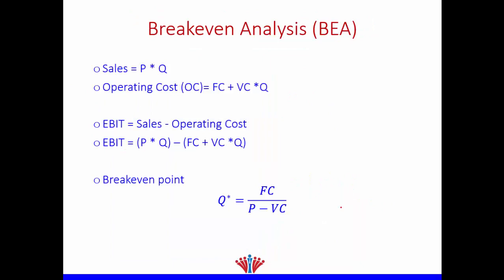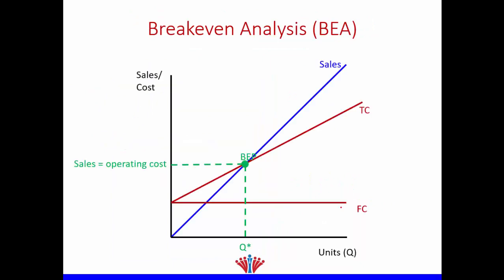Let's draw it. Our fixed cost is a horizontal line. Our total cost is fixed cost plus variable cost, so it has the same shape as variable cost but starts from the fixed cost level. We also have our sales line, the blue line, which starts from zero. The point of intersection between total cost and sales gives us our break-even point, where sales equals operating cost.